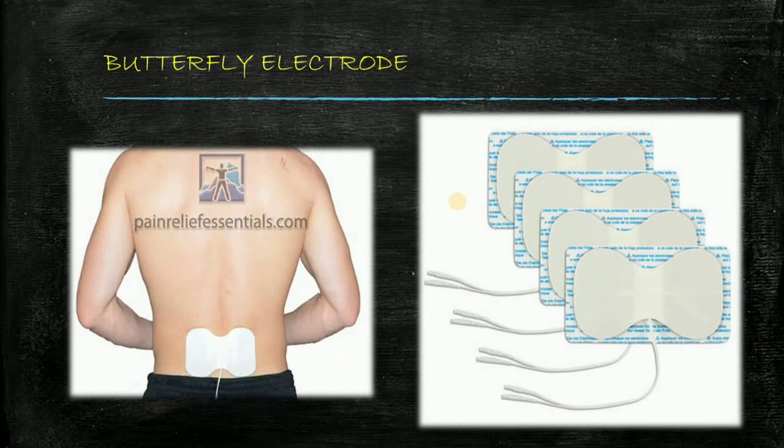Now butterfly electrode. It is one type of surface electrode but the uniqueness of this electrodes are they can easily be accessible to larger skin areas such as thigh, calf, the buttocks, backs, etc. You can see in this diagram there is a butterfly electrodes which is placed on a lower back. Various type of butterfly electrodes are available.